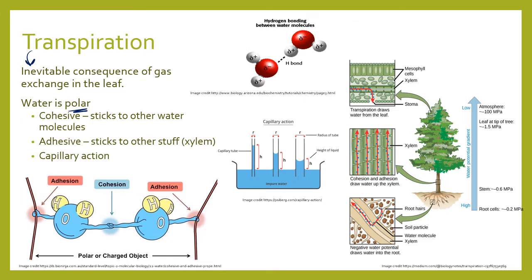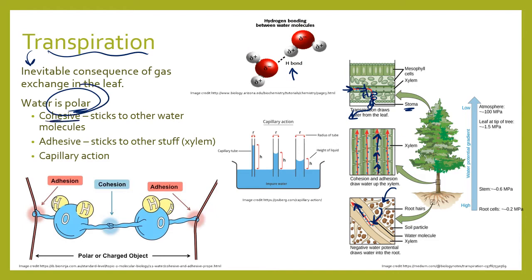Transpiration is the inevitable consequence of gas exchange in the leaf. Water evaporates out of the stomata on the lower surfaces of leaves; as water exits, it pulls the next water molecule up, and the next, because water is polar — those hydrogen bonds hold water molecules together like little magnets. Water moving up pulls the next molecule up through the stem, through the root, and draws water in from the surrounding soil. Water also sticks to other polar substances via adhesion; the xylem parts are polar, making water and xylem adhesive, which leads to capillary action.